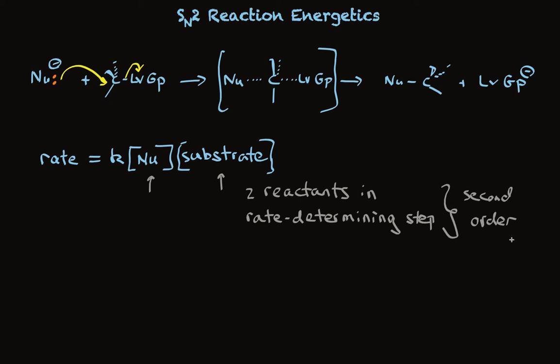Now, in addition to the concentration of nucleophile and substrate affecting the rate, we said how good the leaving group is affects the rate, how good the nucleophile is affects the rate, and the steric requirements of what's attached to carbon affects the rate. Where are they in this equation? Well, in this rate equation, the key component is the rate constant, which contains the activation energy.